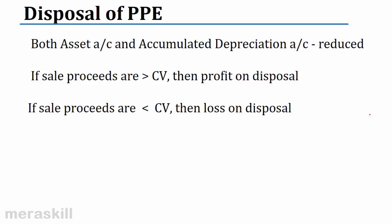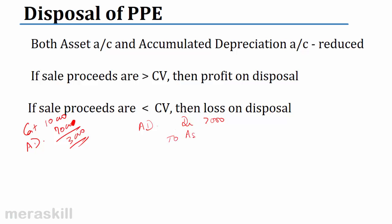Disposal of PP&E: both the asset account and the depreciation account are reduced. When you are disposing of the asset, suppose you started with a cost of $10,000 and now you have accumulated depreciation of $7,000, so the carrying value is $3,000. You have to bring down the value of the asset — credit the asset account — and debit the accumulated depreciation account. Remove accumulated depreciation of $7,000 and remove the asset of $10,000, leaving a carrying value of $3,000.